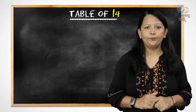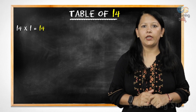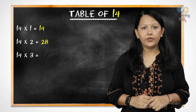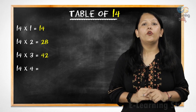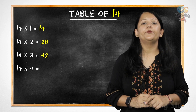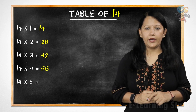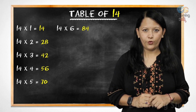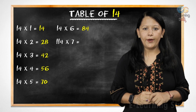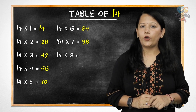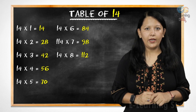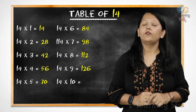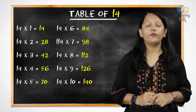Now, let's revise it. 14 ones are 14. 14 twos are 28. 14 threes are 42. 14 fours are 56. 14 fives are 70. 14 sixes are 84. 14 sevens are 98. 14 eights are 112. 14 nines are 126. 14 tens are 140.